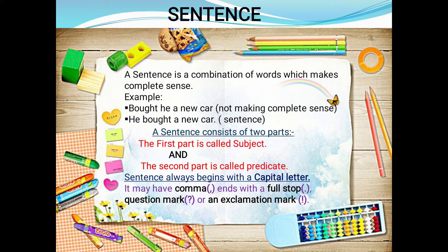A sentence consists of two parts. The first part is called subject and the other part is called predicate. Just as in a class there are boys and girls who together form the students, subject and predicate together make a sentence. A sentence always begins with a capital letter. It may have a comma, and ends with a full stop, question mark, or an exclamation mark.